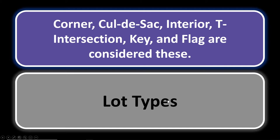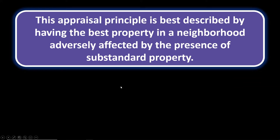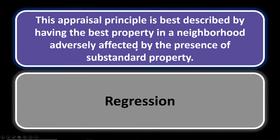Appraisal number three: this appraisal principle is best described by having the best property in a neighborhood adversely affected by the presence of substandard properties. You might over-improve your property to make it look nice, but if it's not in a great area and the surrounding properties aren't up to standard, you are experiencing the principle of regression — not progression.